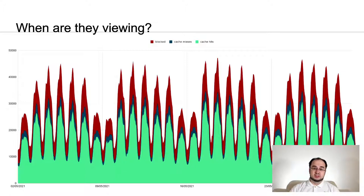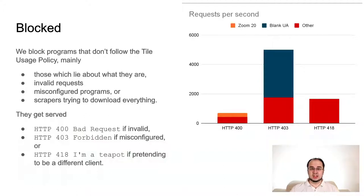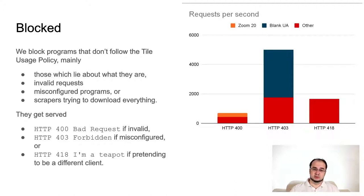On average over the month, we serve 27,000 requests per second, and of these about 7,000 are blocked. We block programs that give bad requests or don't follow the policy. Before blocking, we try to contact them, but this doesn't work if they're hiding who they are or they frequently don't respond. There are about 700 invalid requests per second — a quarter are for Zoom 20, which we've never served, and the rest are buggy software requesting tiles that don't exist. Of the 5,000 blocked requests per second, two-thirds are not sending a user agent. There are about 1,700 fake requests per second, nearly all of which are scrapers pretending to be browsers.